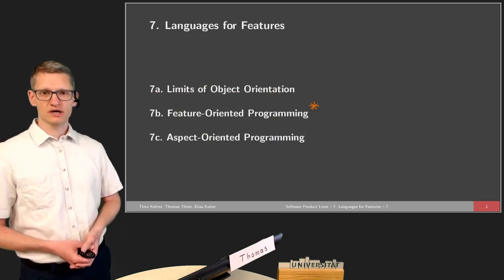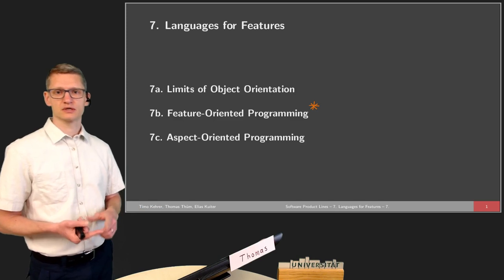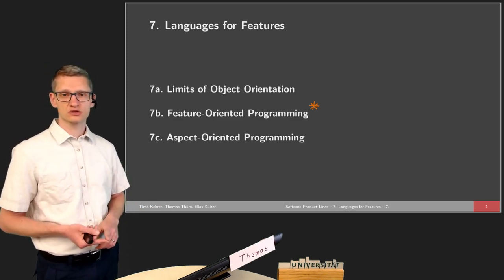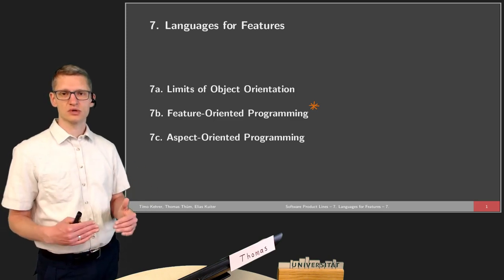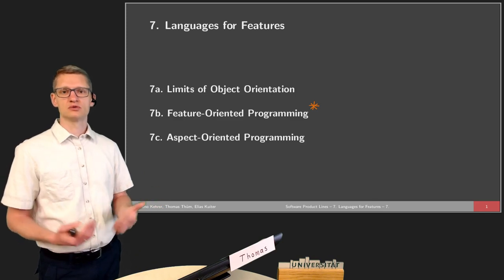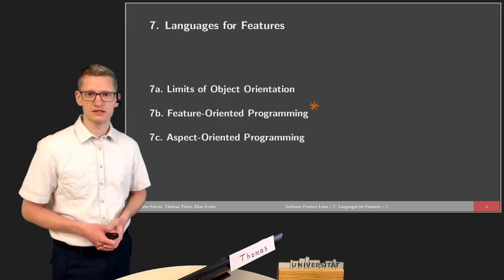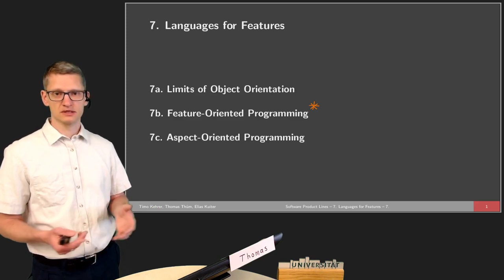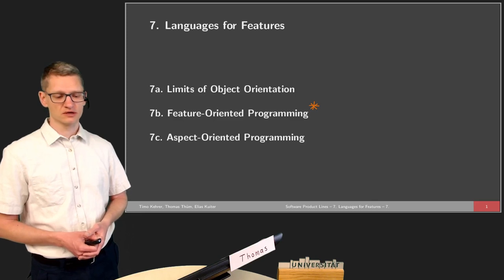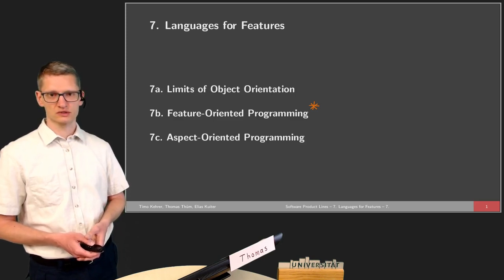This lecture will be divided into three parts. We will first talk about object orientation and what are its limits — a brief recap of the previous lectures where we talked about different strategies to implement features and object-oriented concepts. Then in the second and third parts we will see extensions of object-oriented programming to enable features and their modularity. Feature-oriented programming is a bit special here because I did my PhD on this topic, and I know all its advantages and disadvantages. Aspect-oriented programming was more used in practice and had official tool support and integrated development environments.